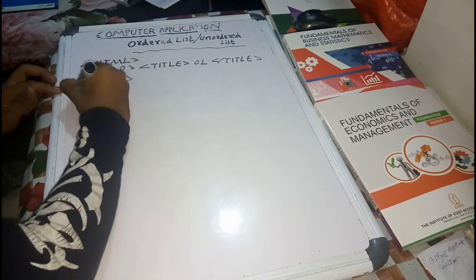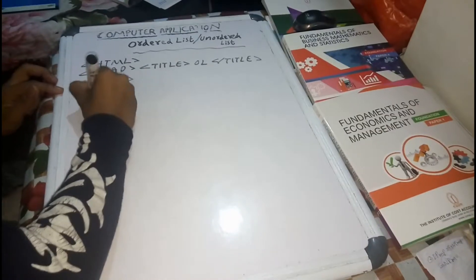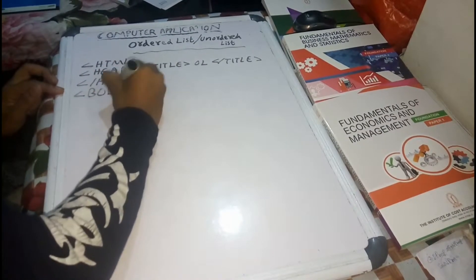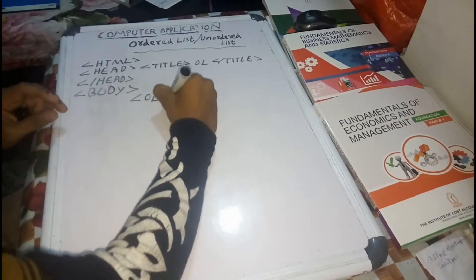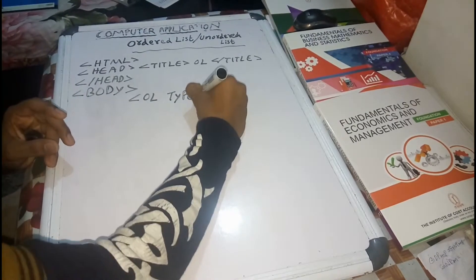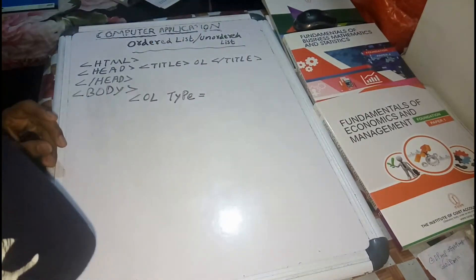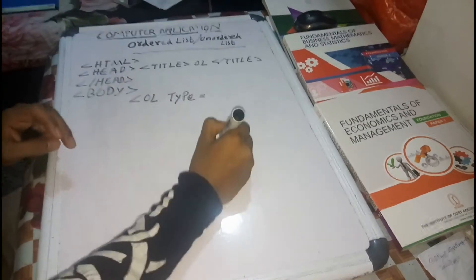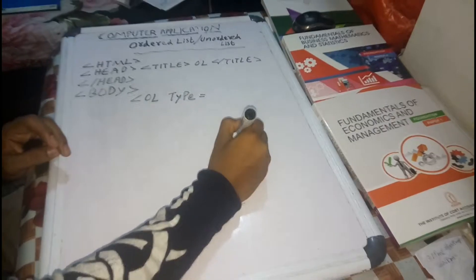It's called body tag. We can write the ordered list inside the body tag. So we write OL — ol — with attribute type. Type is equal to 1, so the list items will be numbered 1, 2, 3.